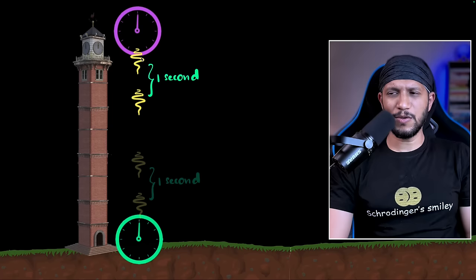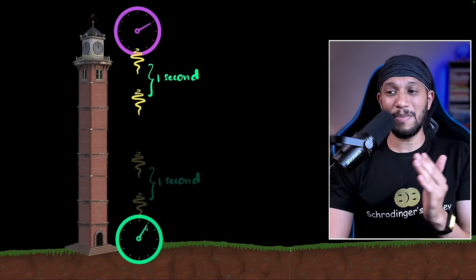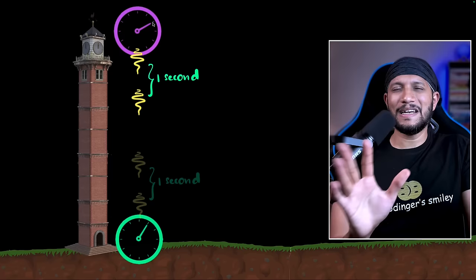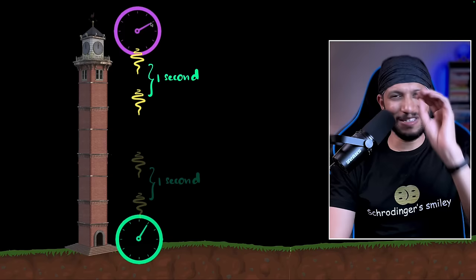But remember, this clock is running slower compared to this clock, which means when one second passes over here, more than one second passes over here. Now again, just for understanding, we'll take simple numbers. Let's say this is two seconds. Again, it's going to be way lesser than that. But just for understanding, let's say it's two seconds.